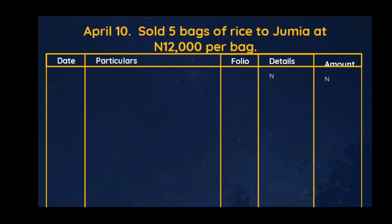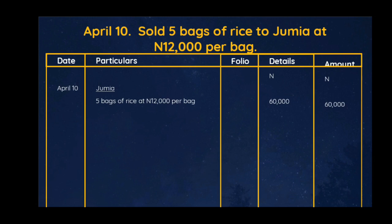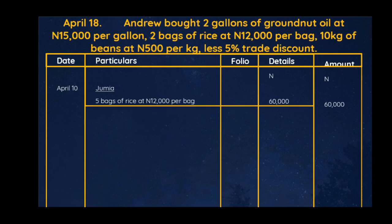April 10: sold five bags of rice to Jumia at 12,000 per bag. We are selling to Jumia, so first we write the date — April 10 — then the name Jumia. Don't forget to put your currency denomination. We enter the transaction: five bags of rice at 12,000 per bag, so 12,000 times 5 equals 60,000 naira. We enter 60,000 naira under the details, then close it. The amount is 60,000 naira, which means the amount Jumia is owing us is 60,000 naira.